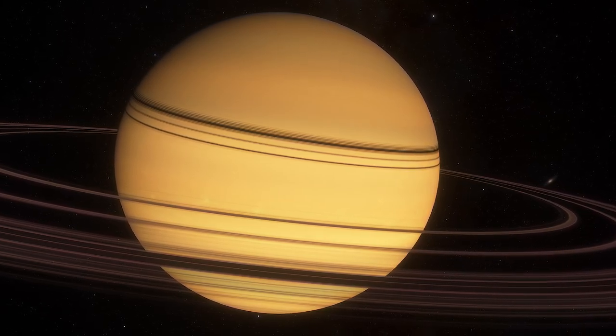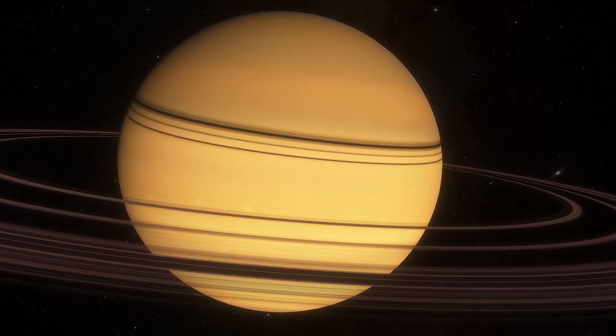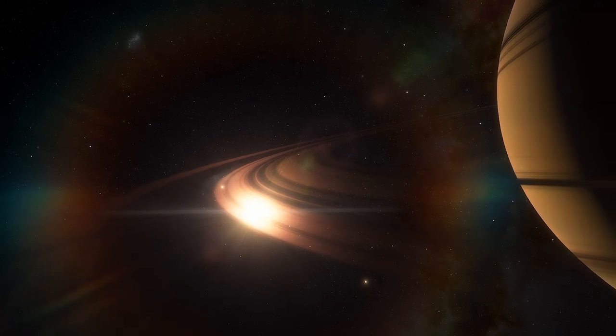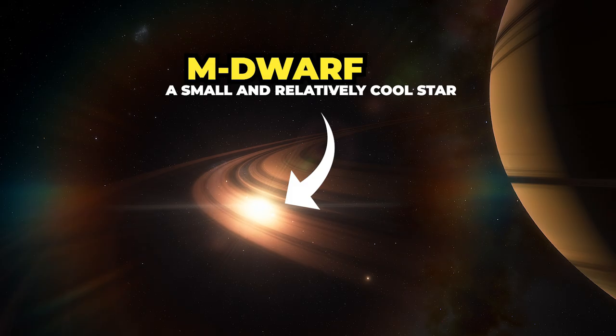This object right here is the biggest known planet in the known universe. Known as ROXS 42BB, the planet is a gas giant that orbits around an M-type star.